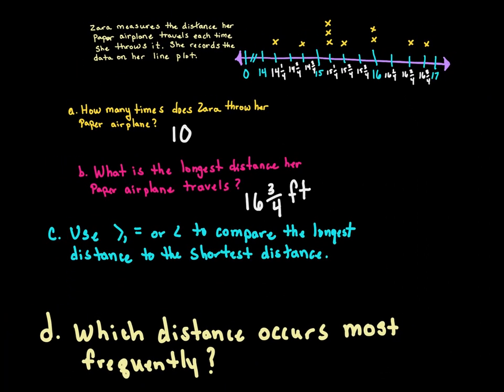Use greater than, less than, or equal to compare the longest distance to the shortest distance. The shortest distance is 14 and one-fourth, and the longest is 16 and three-fourths. Since it says the longest first, we write: 16 and three-fourths feet is greater than 14 and one-fourth.